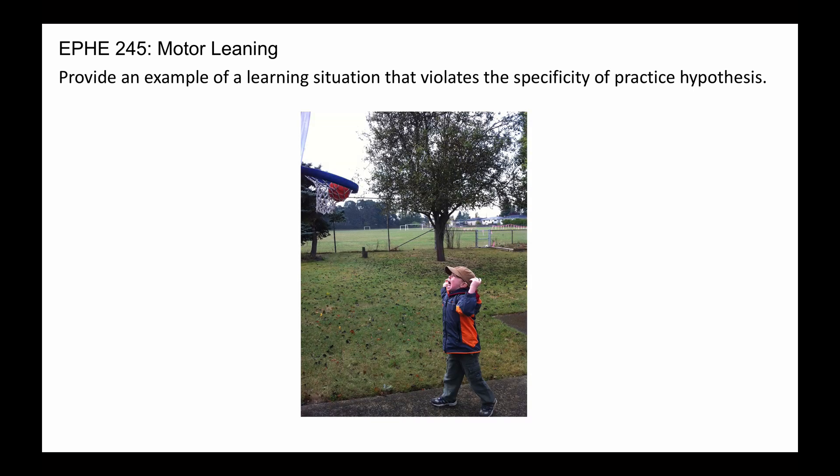Imagine again that you're learning to shoot this basketball. We know what the hypothesis says: as you practice and you learn a motor program or motor representation, that representation will be tied to the sources of afferent feedback that are available. Now look in this case — it's hard to see, but this is a basketball hoop in a backyard. You can imagine that the person then goes to a gym and the afferent feedback is ever so slightly different. The basket might be further from the wall or closer to the wall, because in this case there is no wall. That would in theory violate the specificity of practice hypothesis.